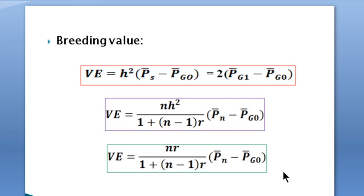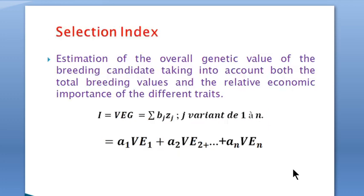What is the selection index? This is an estimation of the overall genetic value of the breeding candidates, taking into account both the total breeding value and the relative economic importance of different traits. Why is this very important? Because commonly in practice, it is difficult to select animals based only on one character, since many traits are transmitted together, probably due to dependence between traits or genetic interaction between genes.